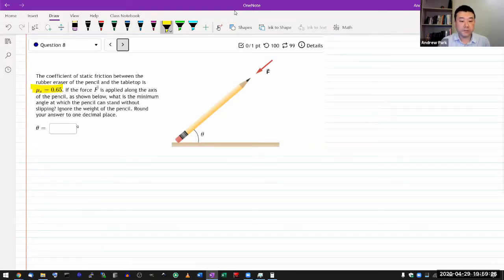What is the minimum angle at which the pencil can stand without slipping? Alright, it says ignore the weight of the pencil.